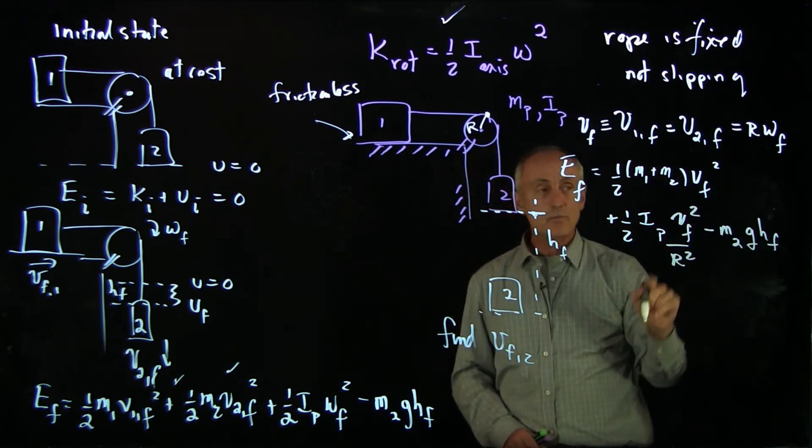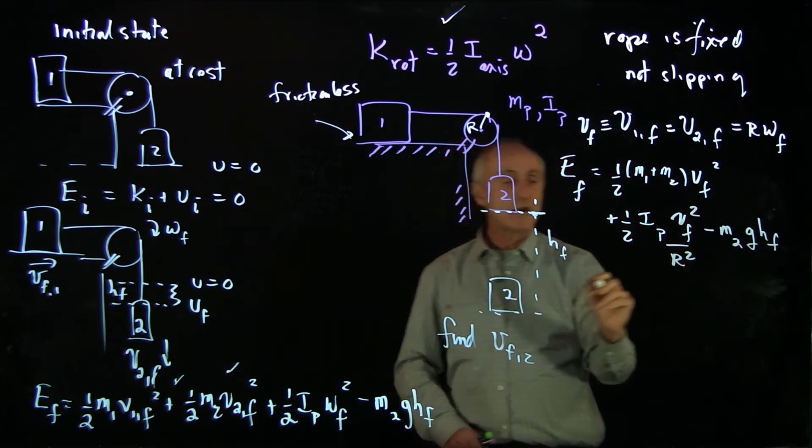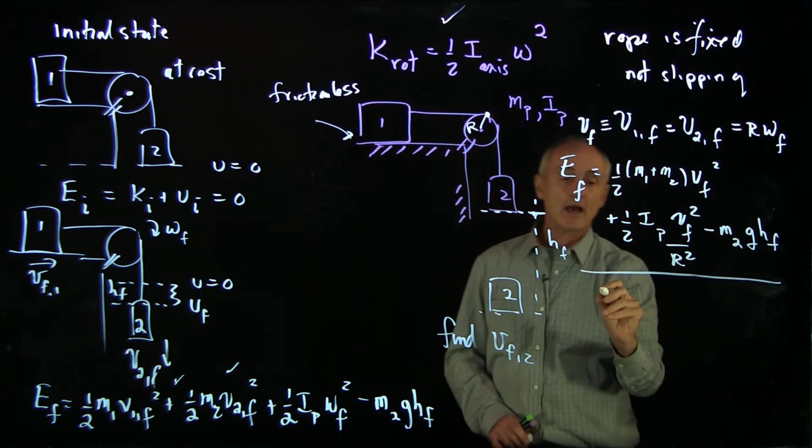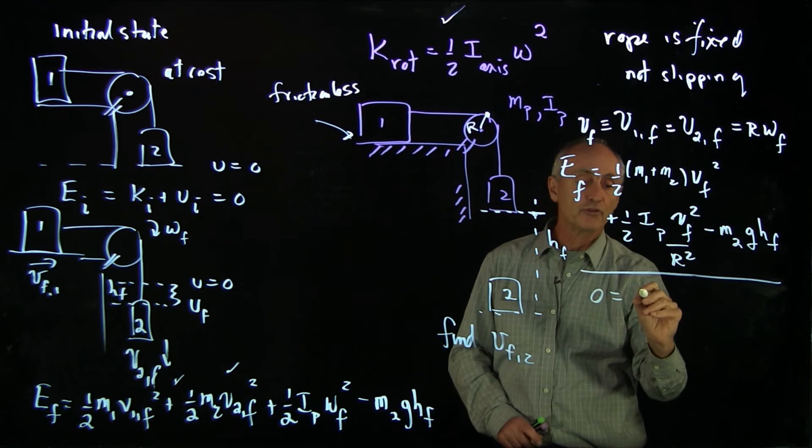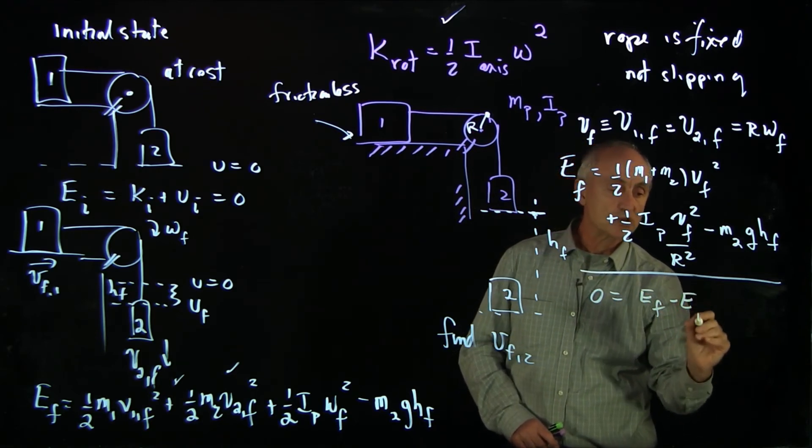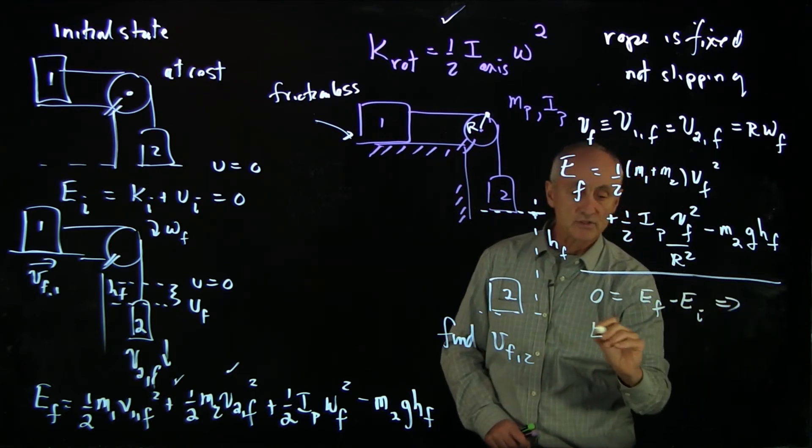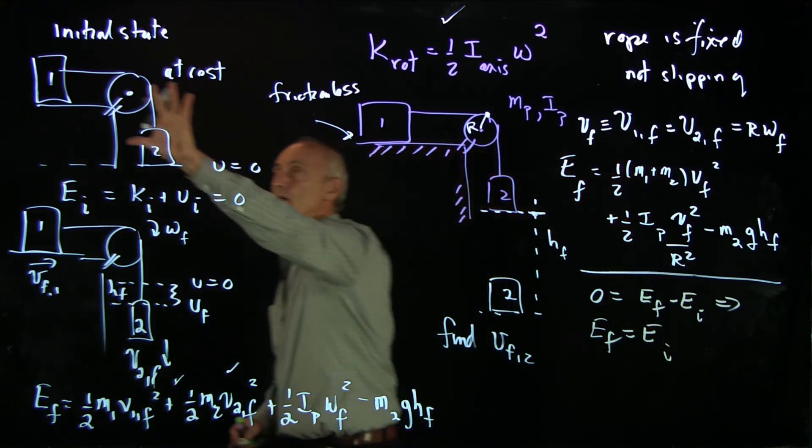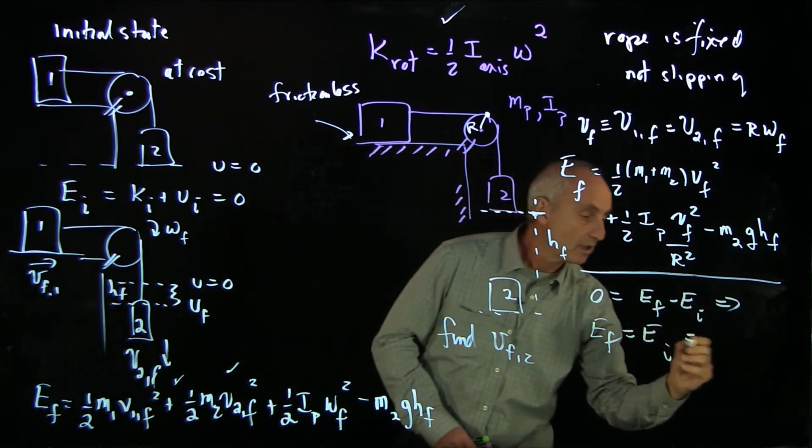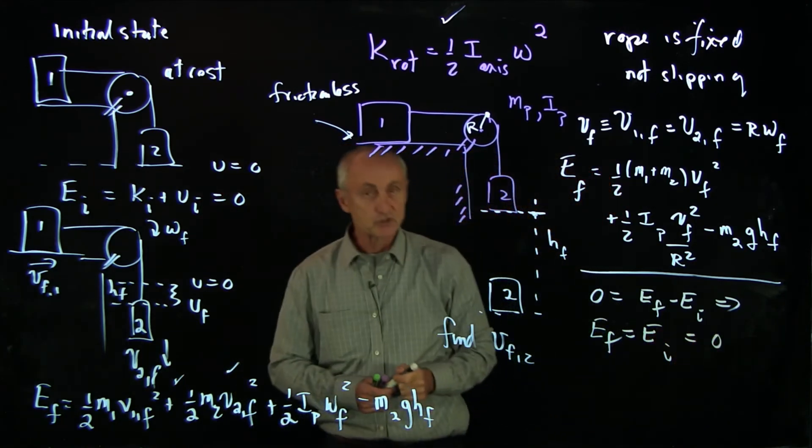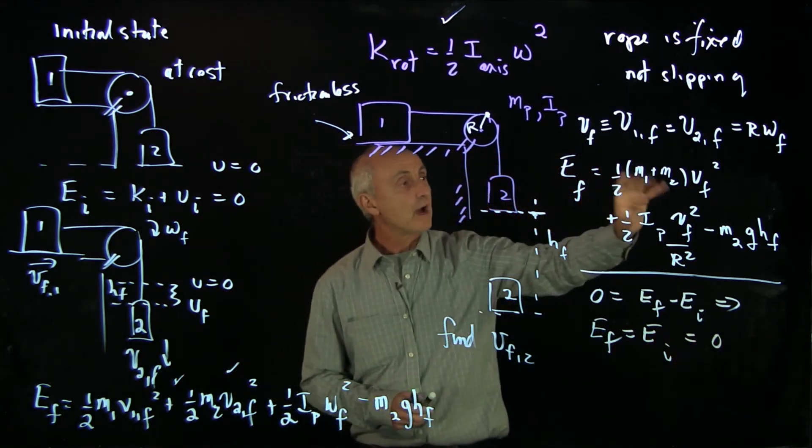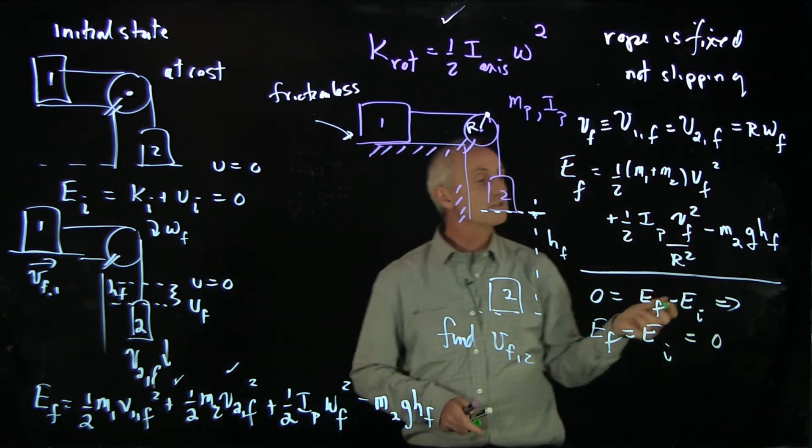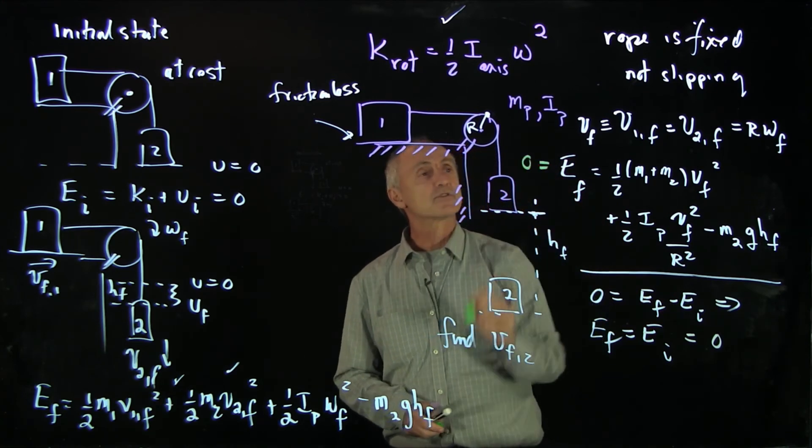So now we can solve our energy principle, which is because we're assuming everything is frictionless, we have 0 equals e final minus e initial, which implies that e final equals e initial. We chose our initial potential energy to be 0. Of course, that's just a choice of constant.